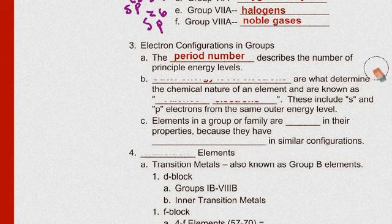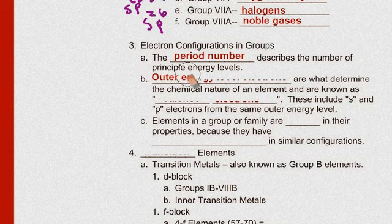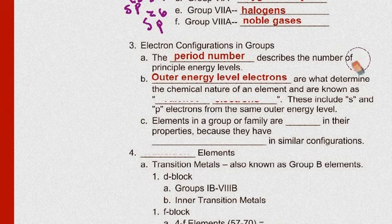When the highest level, the highest energy level orbitals are filled, we have noble gases. This is very important because all elements want their, want their electron configurations filled. They all want this S2P6 configuration, which brings us to the electron configurations in these groups. Okay, the periodic number describes the number of principal energy levels. Okay, we've talked about that from the last period, from the last lecture.